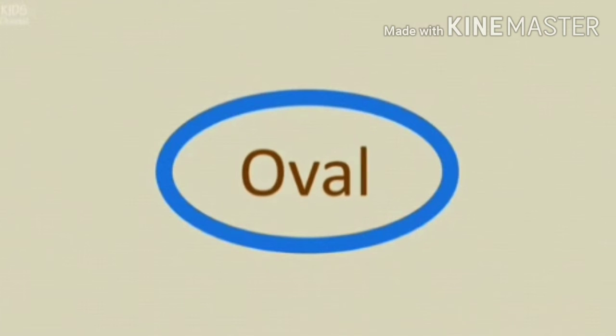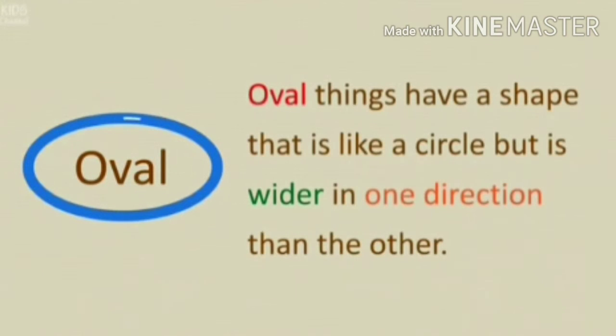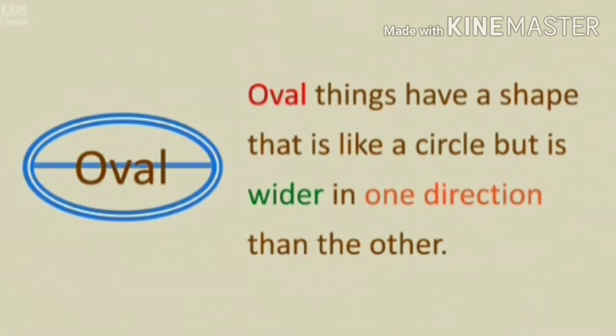Now we will learn about one new shape, that is oval. So let's learn about the shape oval. All things have a shape that is like a circle but is wider in one direction than the other.